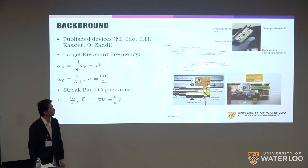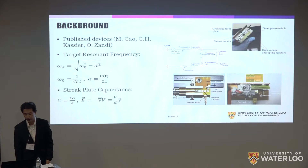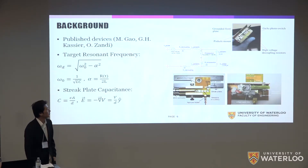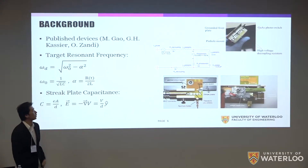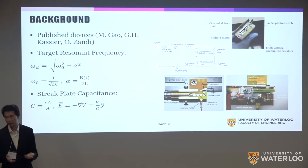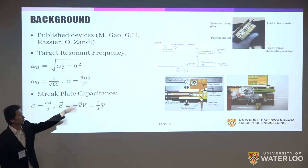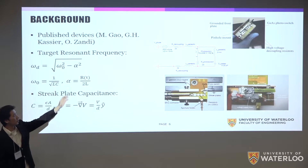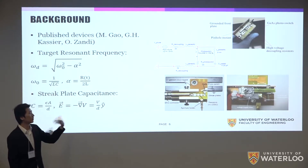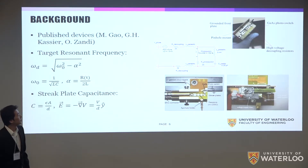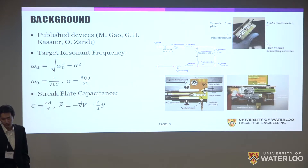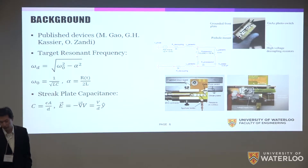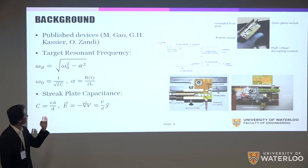There are a lot of papers already published on streak camera designs, and these will be the basis of what we will be designing. Here you can see a basic circuit of what the device is composed of. There's a pulse source of 1.5 kilovolts that charges the plates up to their initial conditions. Once the laser activates the switch, the impedance in that loop is a lot smaller than the decoupling resistors outside, so most of the current will be trapped in there for a couple of oscillations before it damps out.